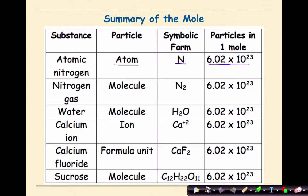Nitrogen gas, which we know is a diatomic, would be considered a molecule. Representation N2. And in one mole of diatomic nitrogen, there would be 6.02 times 10 to the 23rd molecules. Water is a molecule with a formula of H2O. And one mole of water would have 6.02 times 10 to the 23rd molecules of water.